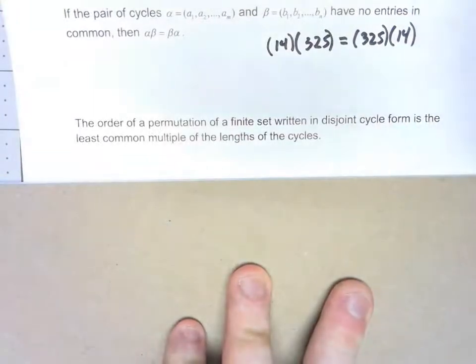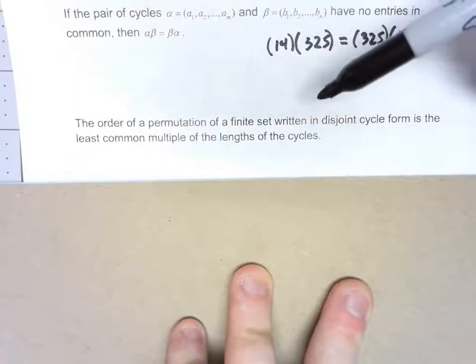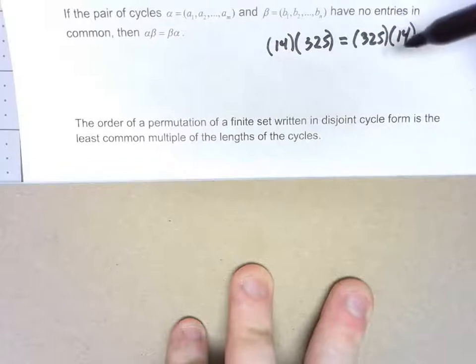Now final one, and this one is huge. It makes perfect sense, but the order of a permutation of a finite set written in disjoint cycle notation, the order of a permutation has to be the least common multiple of the lengths of the cycles.